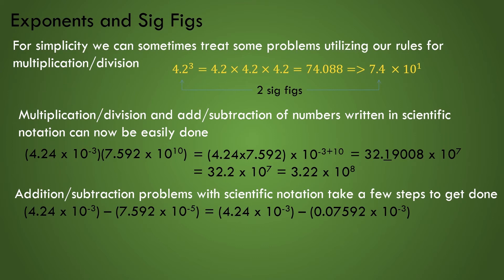To get a minus 3 exponent on the second number, we would need to add 2 to the exponent, which means from powers, we have to move the decimal place left two spots, resulting in the value 0.07592 times 10 to the power of minus 3.